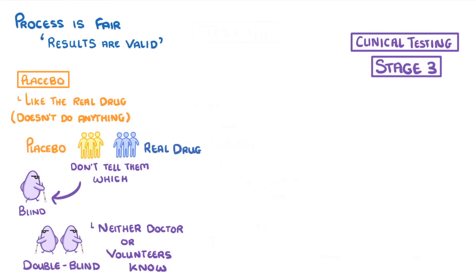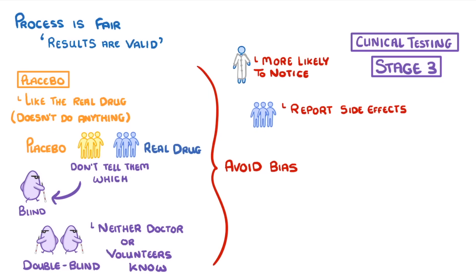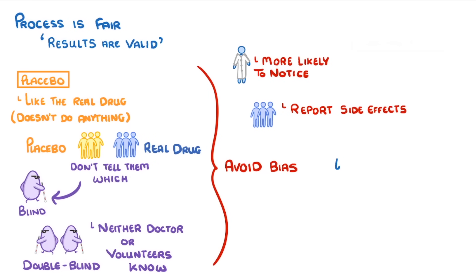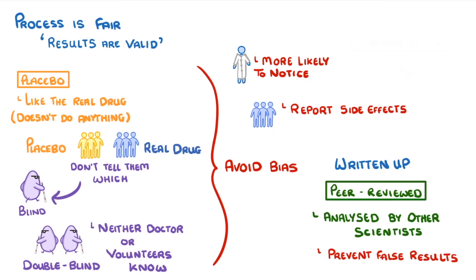The purpose of all of this blind and double-blind methodology is to avoid any unconscious bias. For example, if the volunteers knew that they were taking the drug, they might be more likely to report any side effects, and their doctors might be more likely to notice them. Finally, once all the drug testing is complete, the results are written up and peer-reviewed, which means they're analysed by other scientists to check that the tests were fair. This rigorous analysis is central to all of science, and it helps to prevent any false claims or results from getting published.